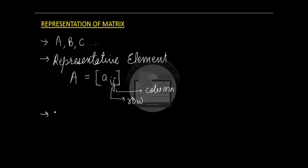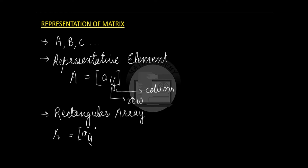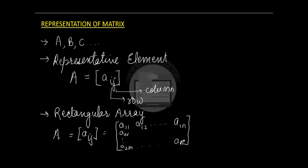A matrix can also be represented in the form of a rectangular array. This rectangular array is an array which consists of all the elements of the matrix. So if we have a matrix A, it can be represented in a rectangular array form: A11, A12 and so on, A1N, A21 and so on, A2M — and we fill in all the elements of the matrix here. This is a M cross N matrix.